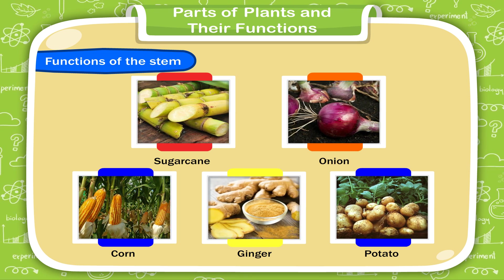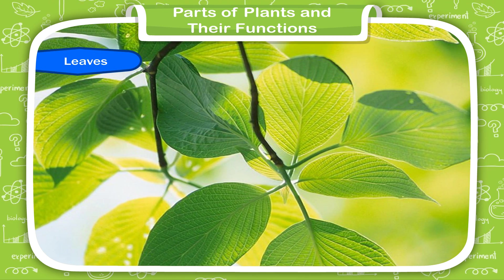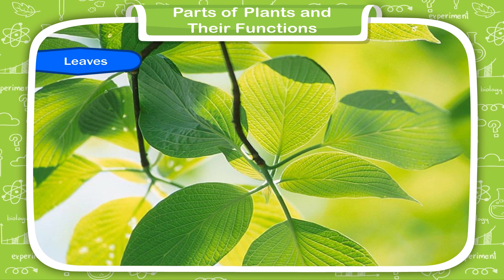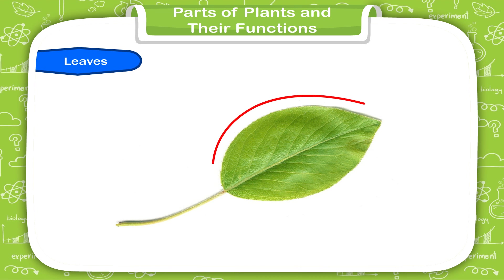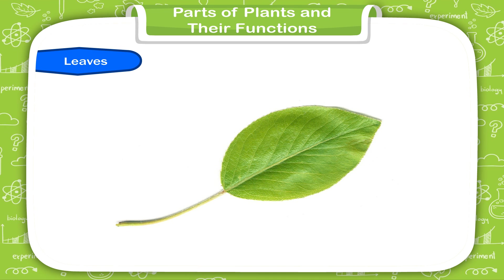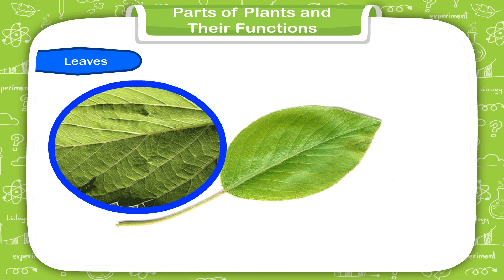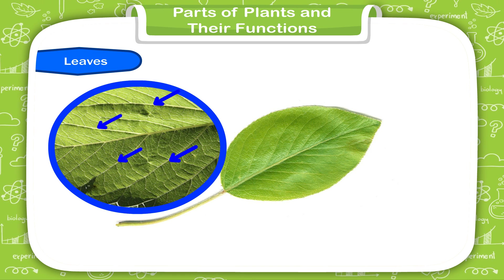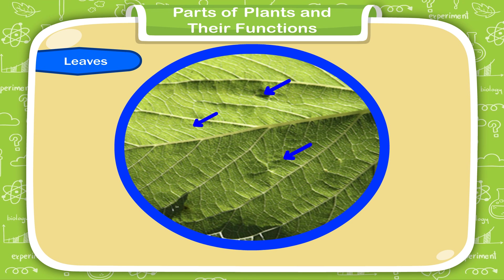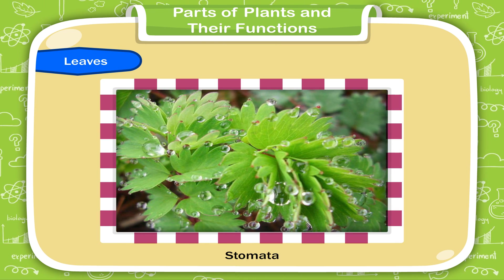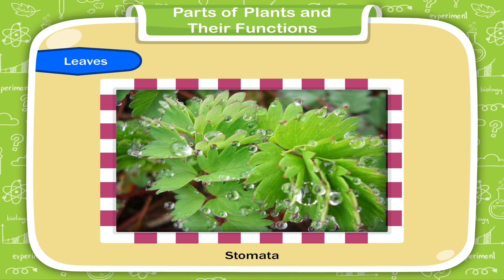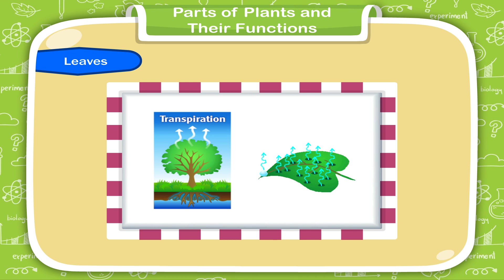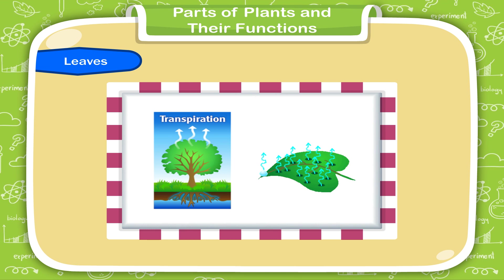We eat the stems of these plants. Leaves. The most important part of the shoot is the leaf. Most plants have green leaves. Leaves are of different shapes and sizes. The flat and broad part of a leaf is known as the leaf blade. Web-like structures on the leaf blade are called veins. In the middle of the leaf is its main vein, and many side veins arise from it. These veins bring water to the leaf. There are many tiny pores on the leaf called stomata. Plants breathe air through the stomata. Stomata also help the leaves to evaporate water in a process known as transpiration.